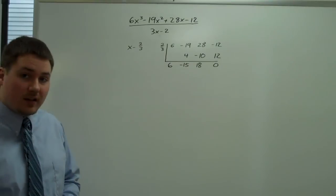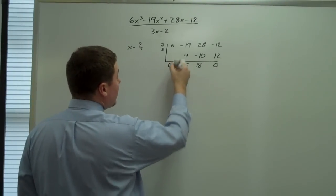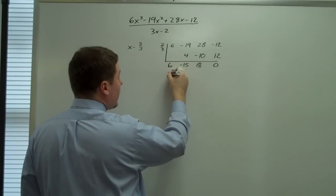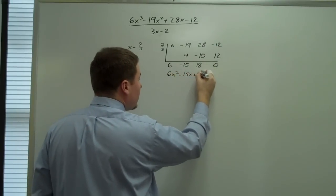So we have our remainder of 0. So it turns out that this is actually a factor. Now we have to be careful when we read our answer. We'd want to say that since this was an x cubed, this is an x squared. 6x squared minus 15x plus 18.